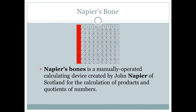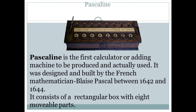The next is Pascaline. Pascaline was developed by Blaise Pascal, who was a French mathematician. It is also known as the first calculator or Pascal's adding machine. It consists of a rectangular box with eight movable parts.